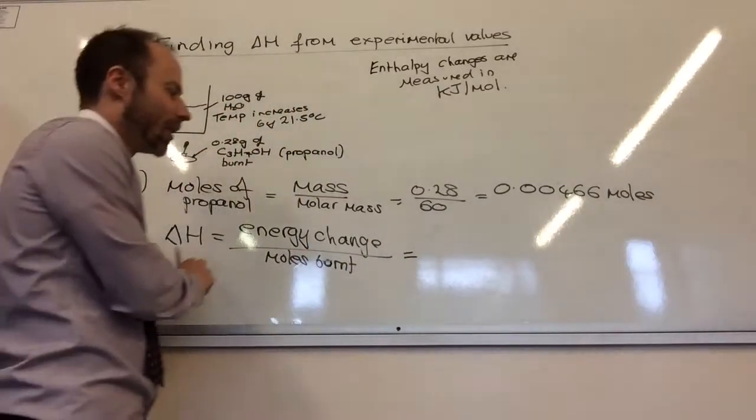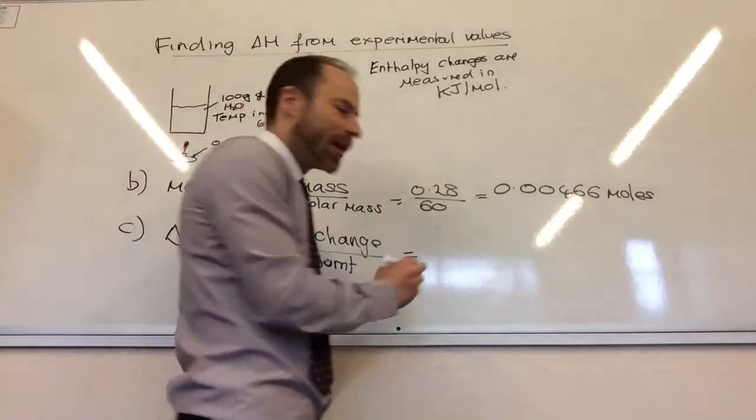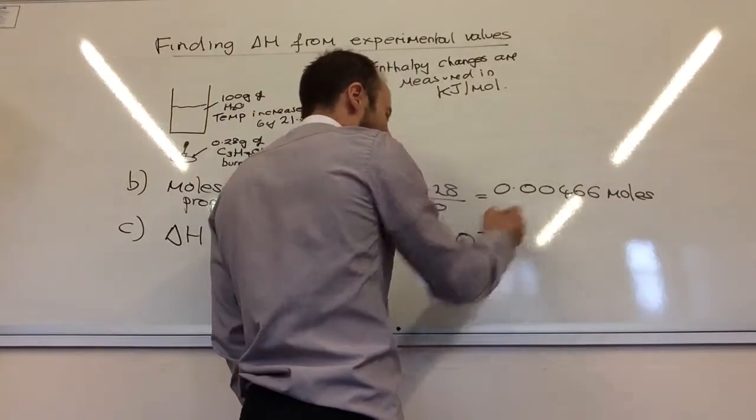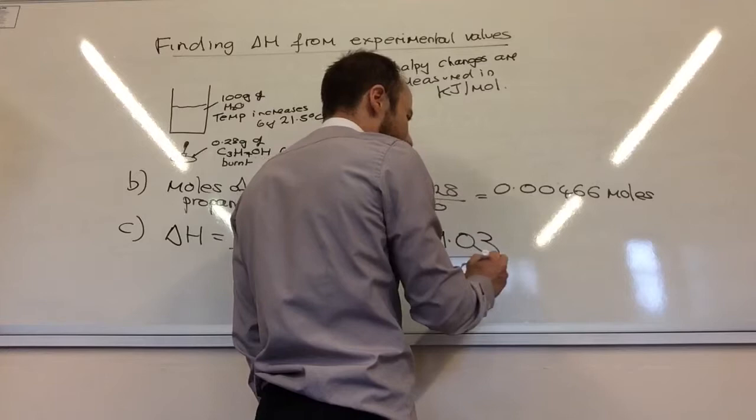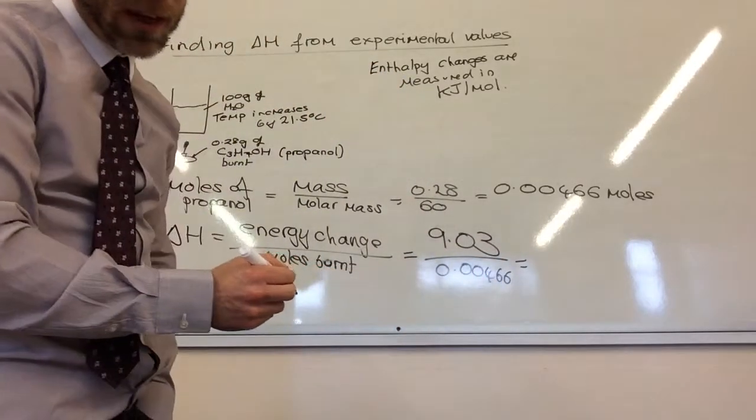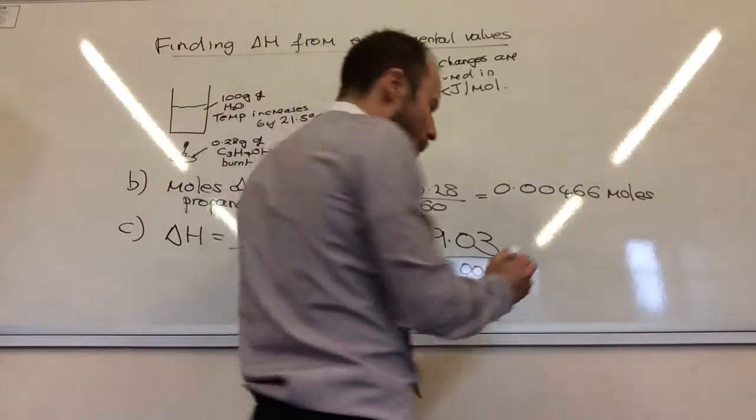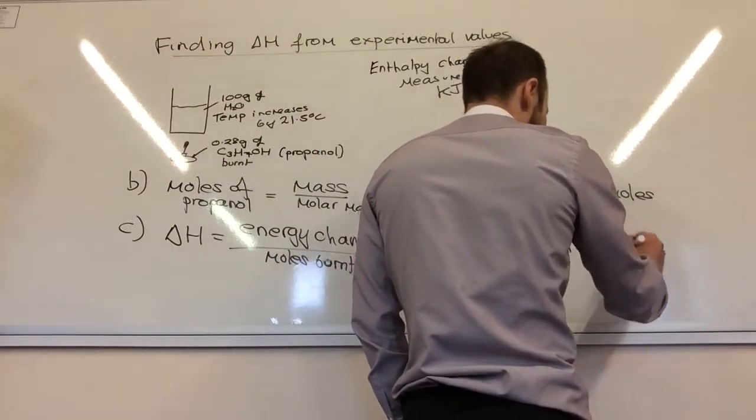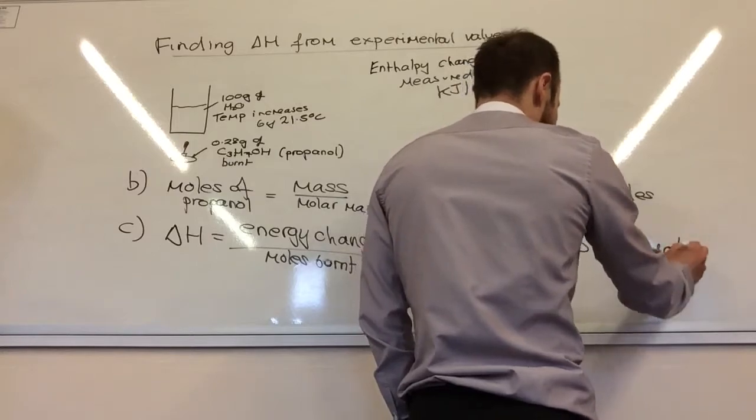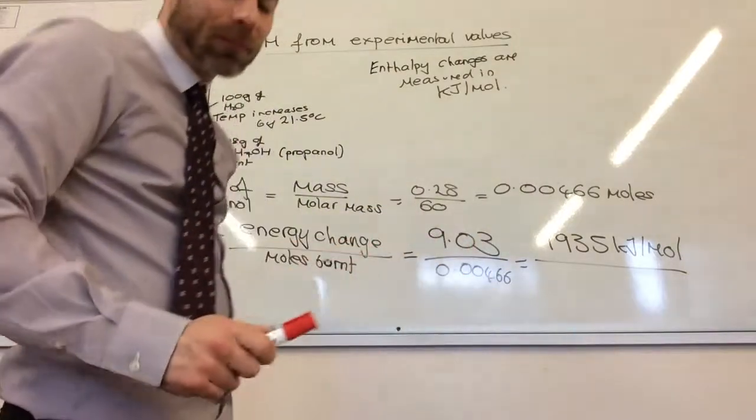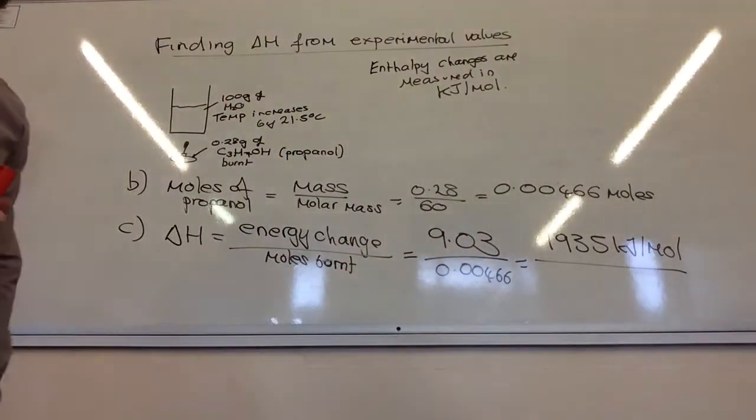I'm calculating delta H. The energy change we worked out to be 9.03. The moles burnt is 0.00466. If you do that, it comes to 1,935 kilojoules per mole.